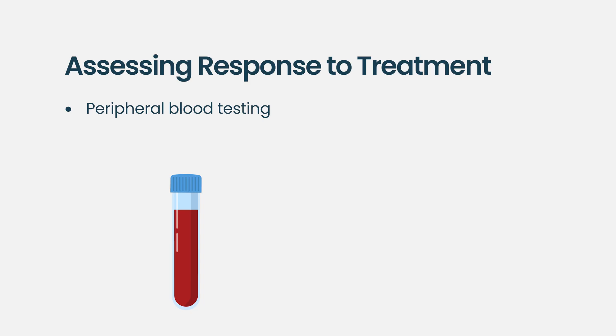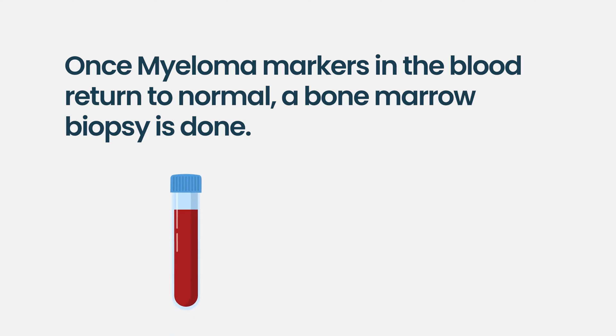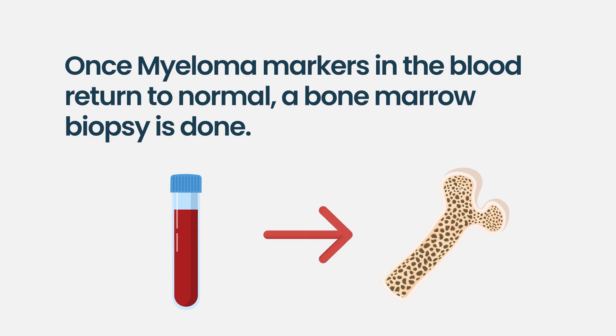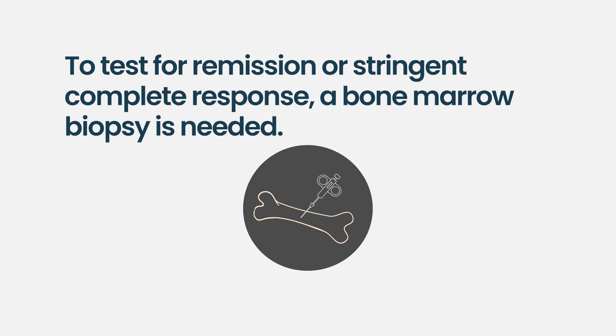When assessing response for patients with multiple myeloma, there are two broad categories: peripheral blood testing — just a blood draw from a port or vein — and tests run on bone marrow. Ongoing blood testing tells you if serum markers are improving, and once those numbers go essentially to normal you begin to wonder if the bone marrow has normalized as well. To confirm complete response or stringent complete response, you would need a bone marrow biopsy to ensure myeloma cells can't be identified.